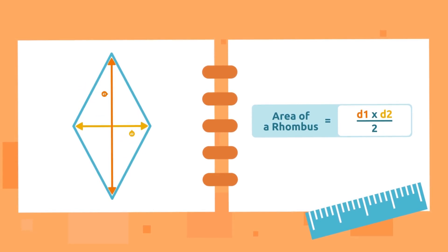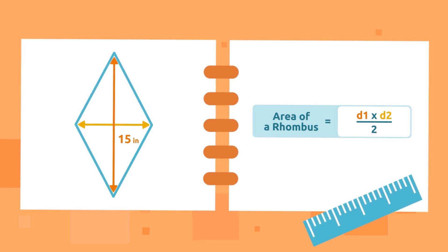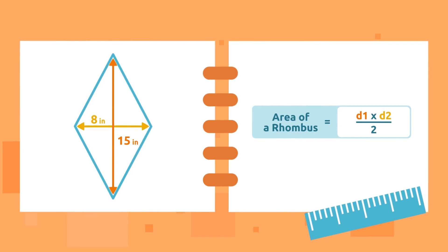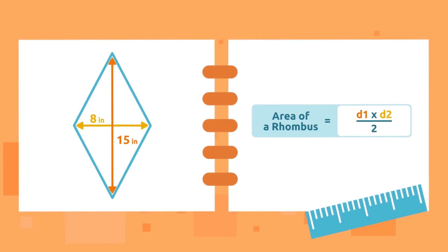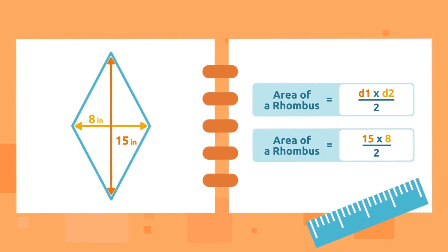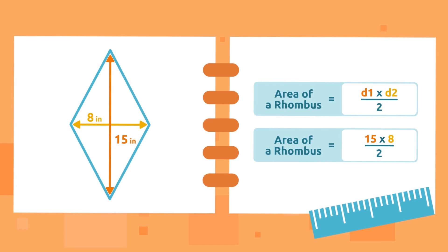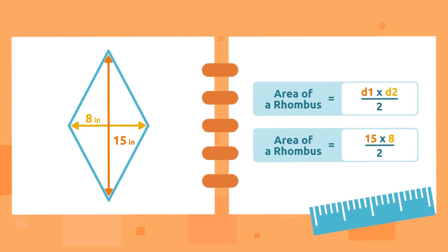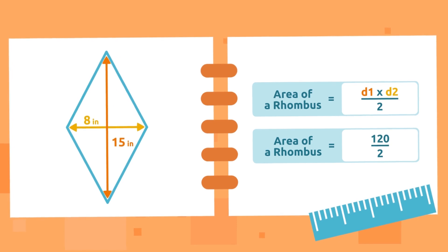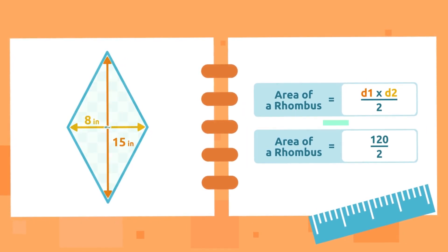Let's practice. The longest diagonal of this rhombus measures 15 inches and the shortest diagonal measures eight inches. What will its area be? To calculate the area of a rhombus, we multiply the longest diagonal by the shortest diagonal and then divide by two. That is 15 times 8 equals 120, and 120 divided by 2 equals 60.